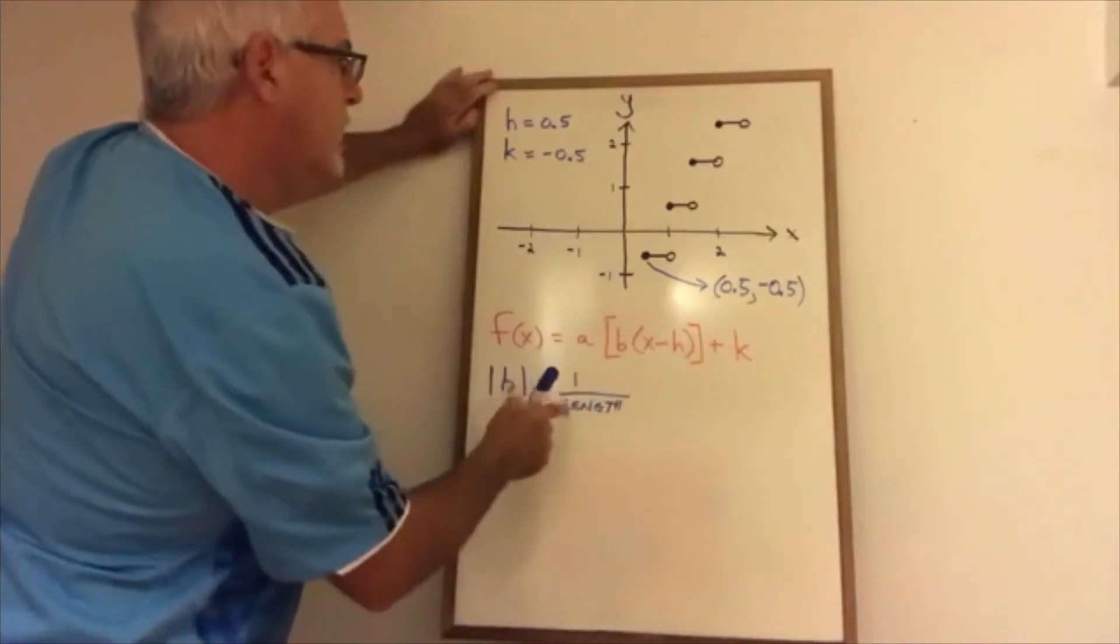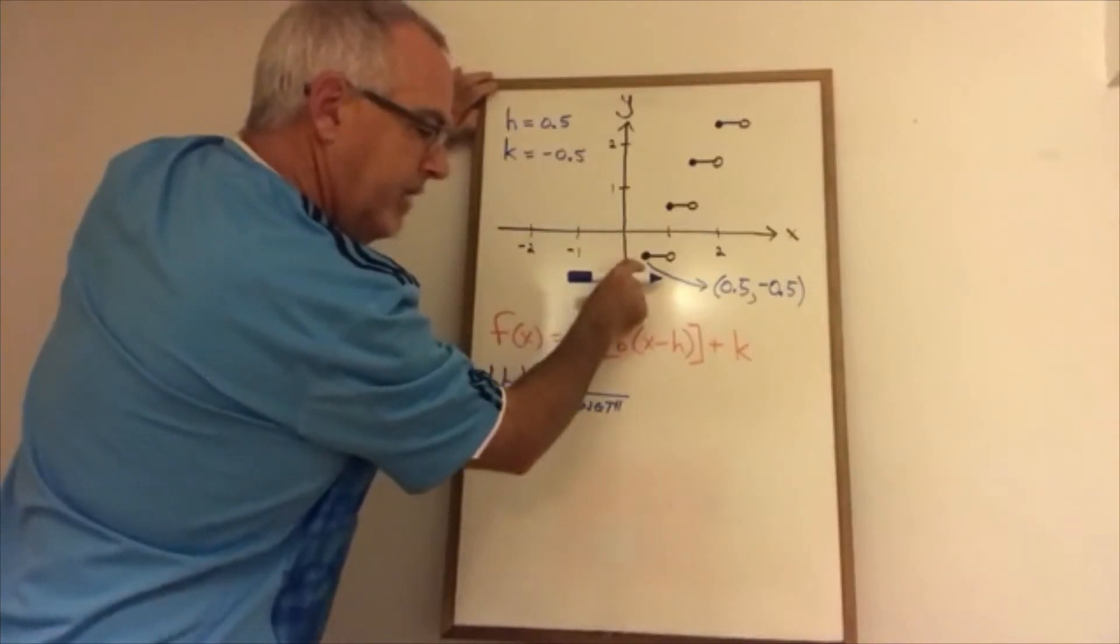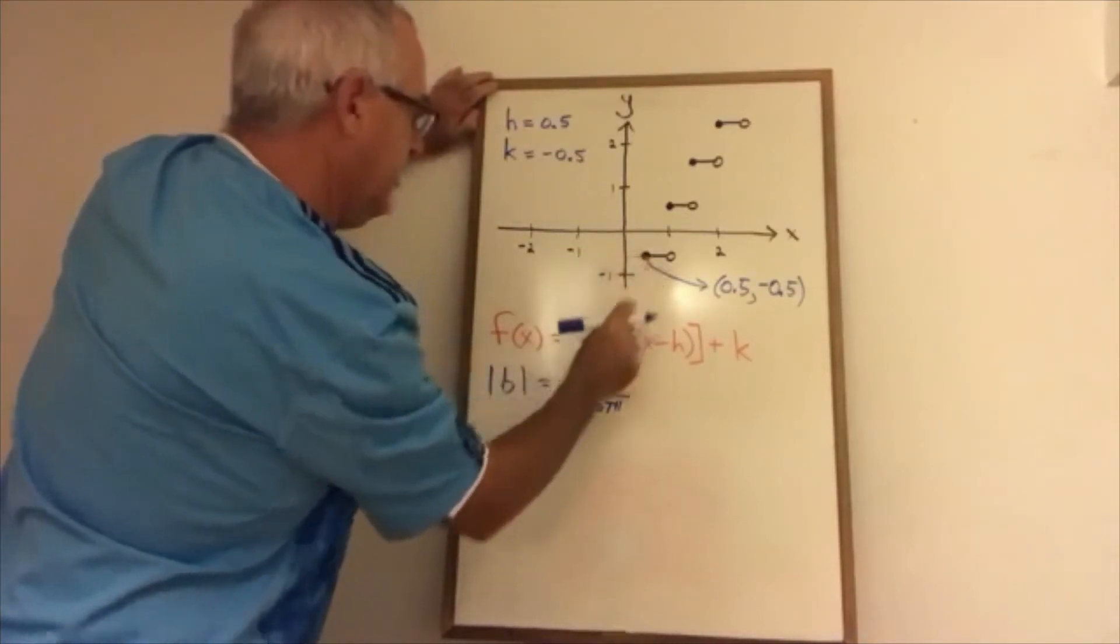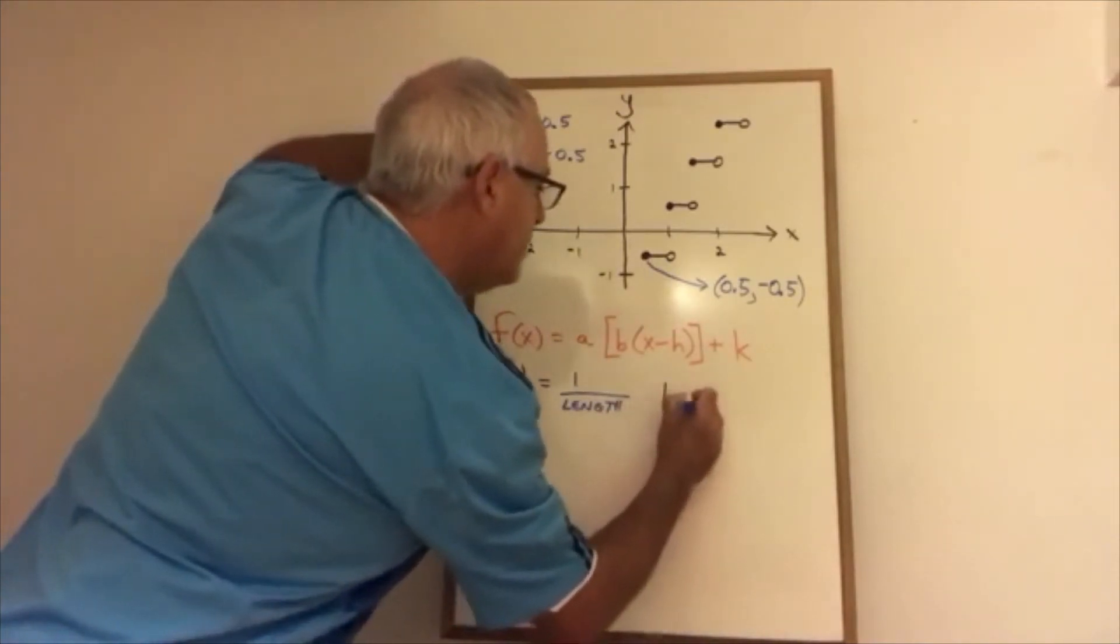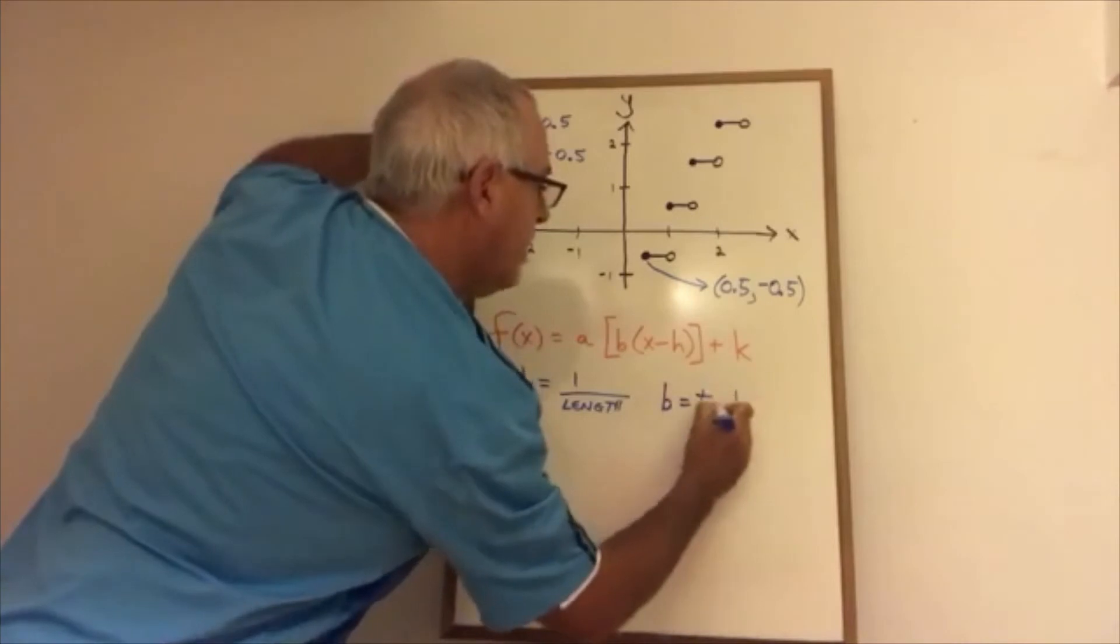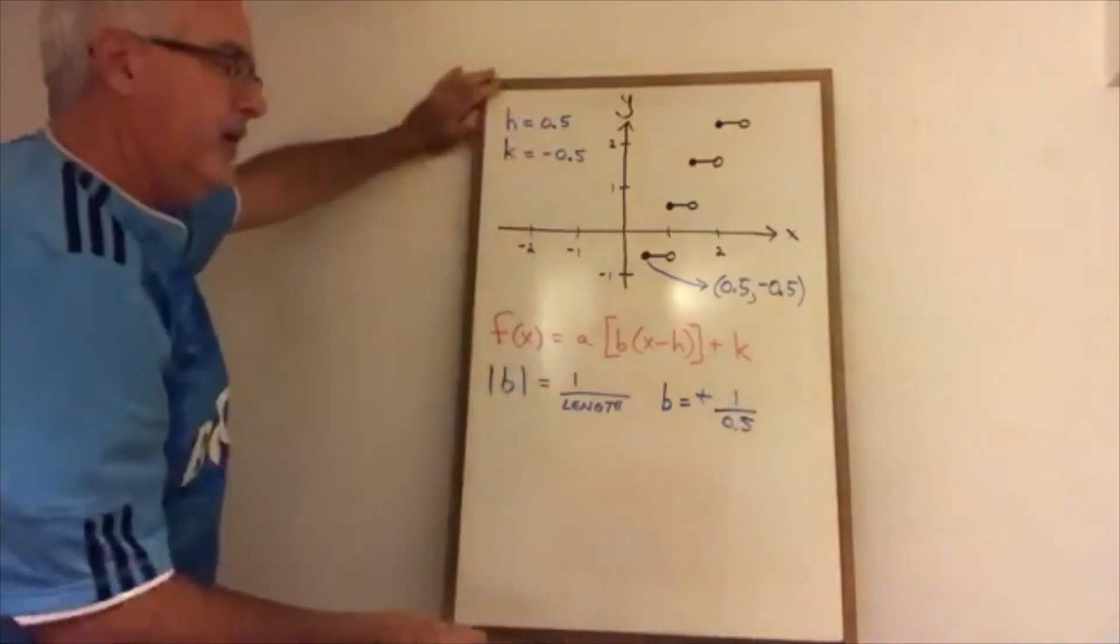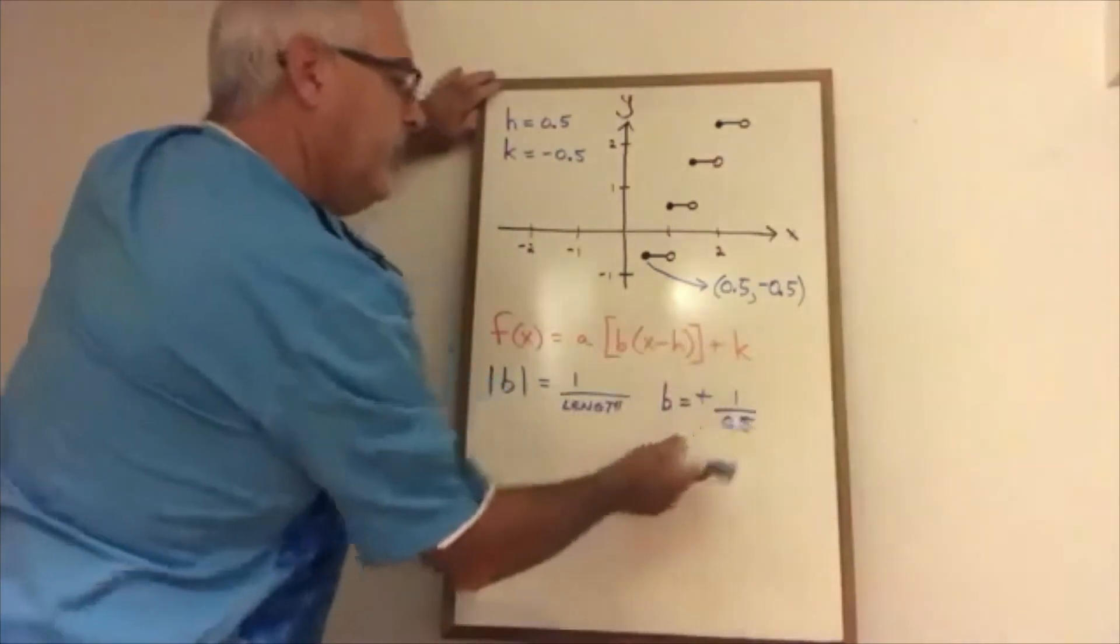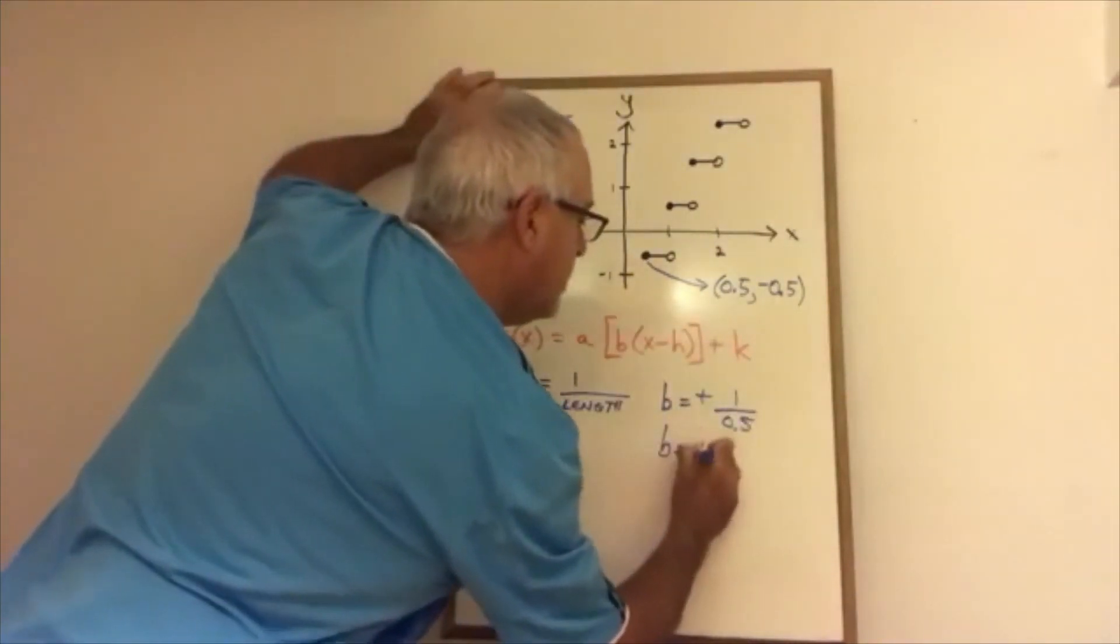And I also need to know the sign of b. These steps have a closed circle on the left. That means that b is positive. So b is equal to positive 1 over 0.5. But that's not very well simplified. 1 divided by 0.5 is 2. So b equals positive 2.